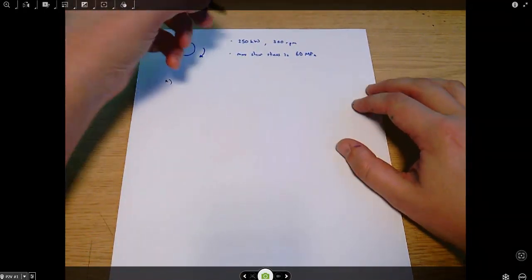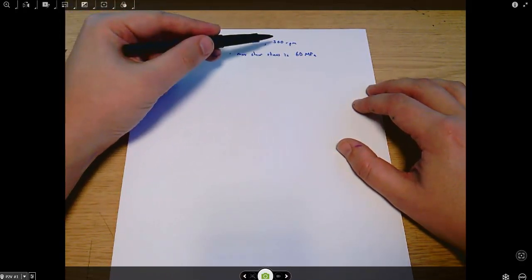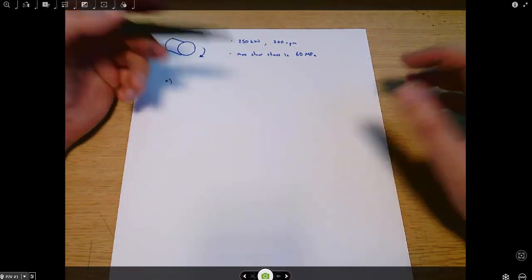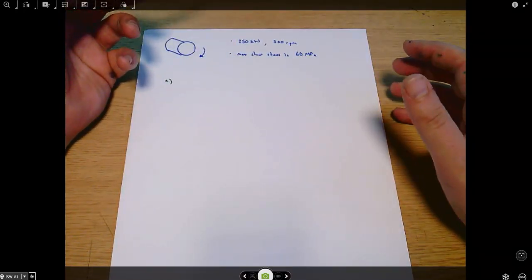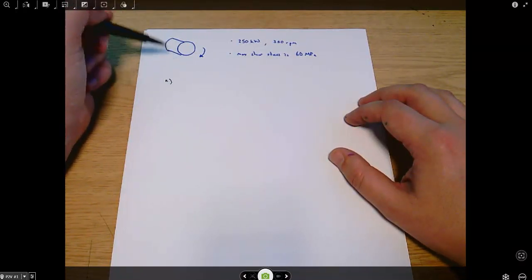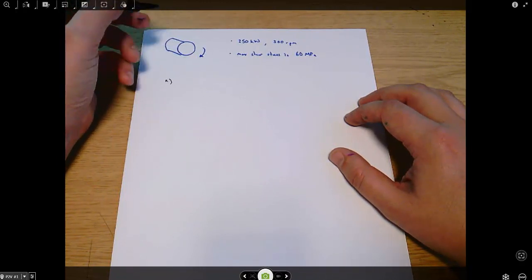The first thing we need to do when we get a power and a rotary speed is convert those into a torque. Torque is useful because it turns up in the torsion equation, and so we can work out what kinds of geometry we need from the torsion equation.